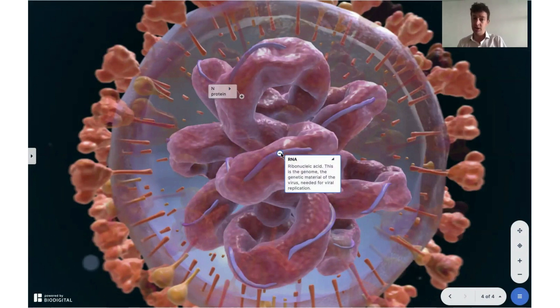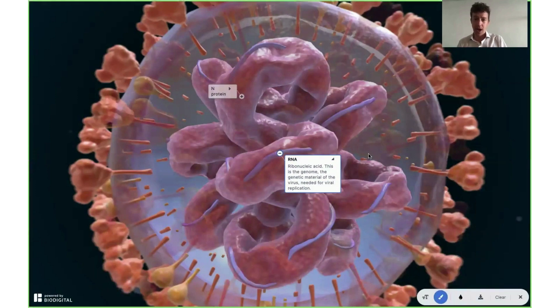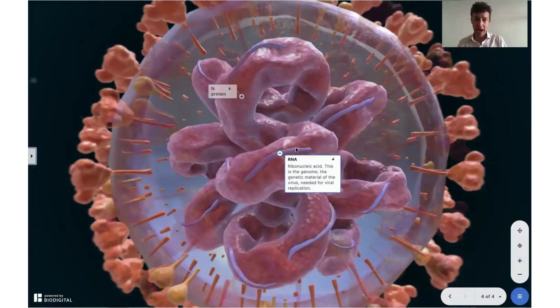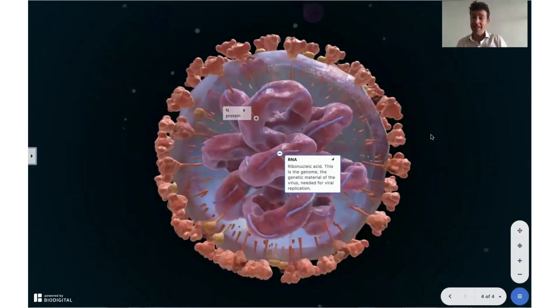So what Johnson & Johnson did was they took the RNA, a particular bit of the RNA which coded for these spike proteins. And then what they did was they very cleverly made DNA, double-stranded DNA, which also codes for that RNA. And then they put that into a virus.